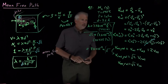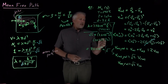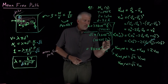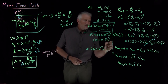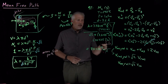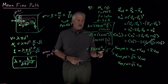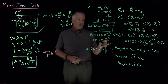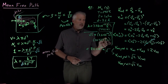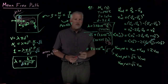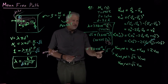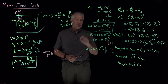Checking the units: pascals can be written as joules per cubic meter, so in the denominator we have meters to the minus 3 times meters squared, leaving meters to the minus 1 in the denominator. Combined with joules canceling joules and kelvins canceling kelvins, the result has units of meters, as expected for a distance like the mean free path.